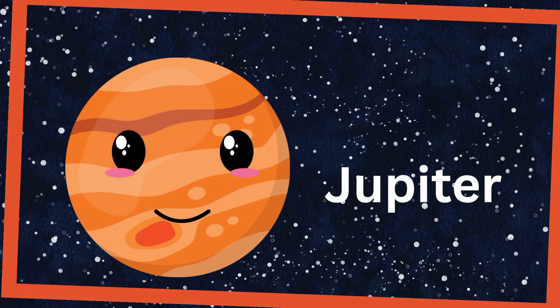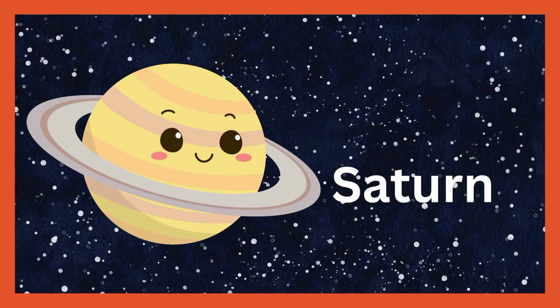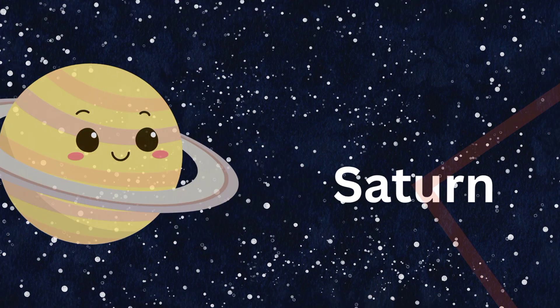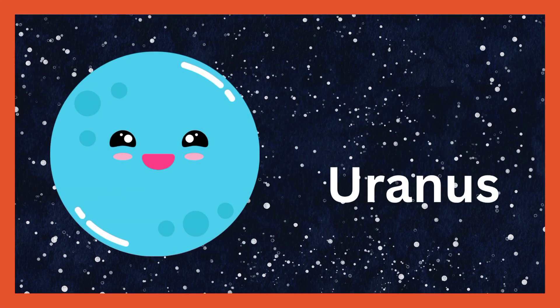Jupiter's big with storms that roar, Saturn's rings like never before, Uranus spins on its side and stays.